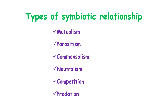The list we're going to look at today includes mutualism, parasitism, commensalism, competition, and predation. Remember that a symbiotic relationship refers to either a feeding or living relationship among or between organisms within an ecosystem.